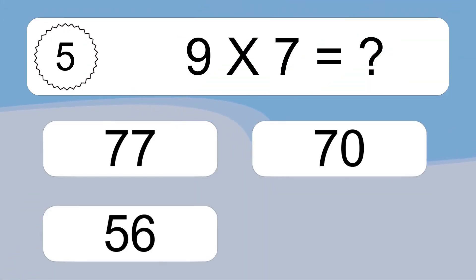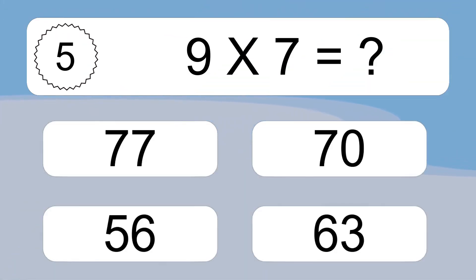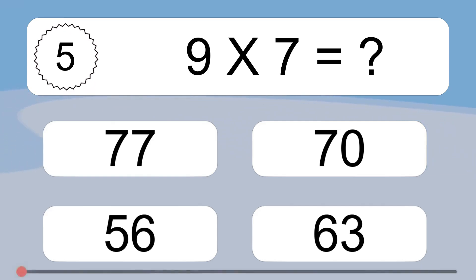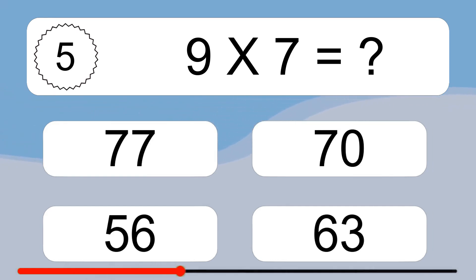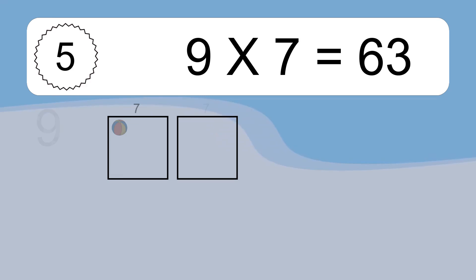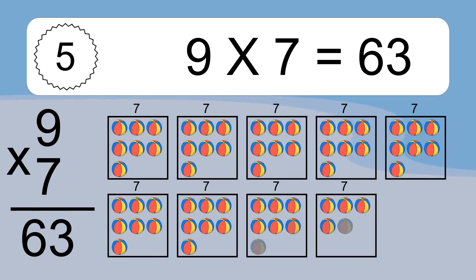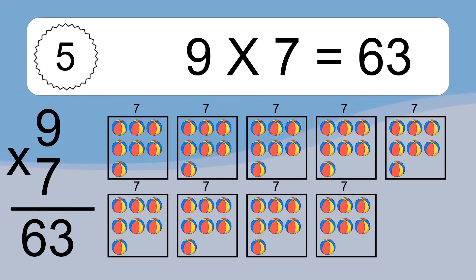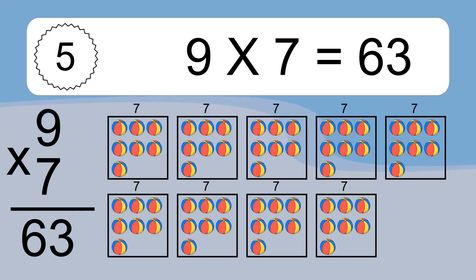9 times 7 equals what? We have 9 boxes, and each box has 7 colorful balls inside. If you count all the balls in all the boxes together, you will have 9 times 7 balls. This equals 63 balls.